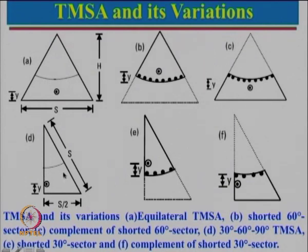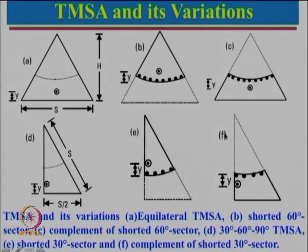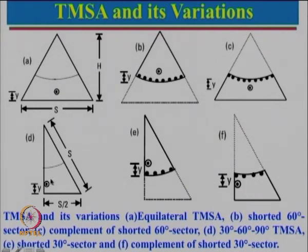For the feed point shown, there will be a null similarly. Using just half the portion, there are two possibilities: we can short the entire edge and put a feed point — this is called the shorted 30-degree sector — or we can use the complement of that, discarding the other portion. All these configurations came from extending the concept of the circular microstrip antenna.